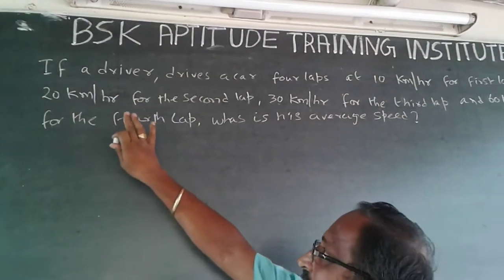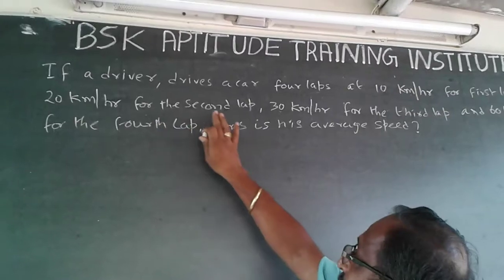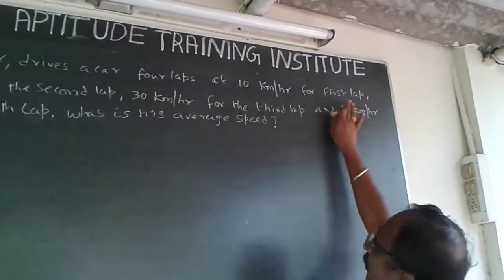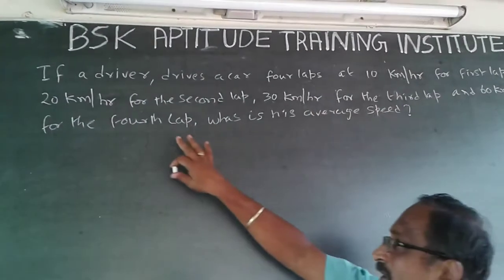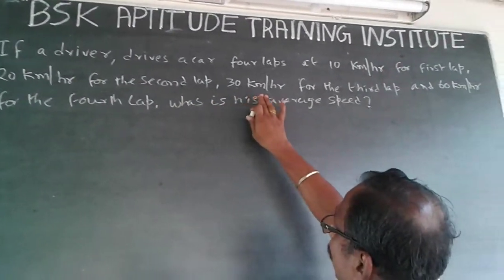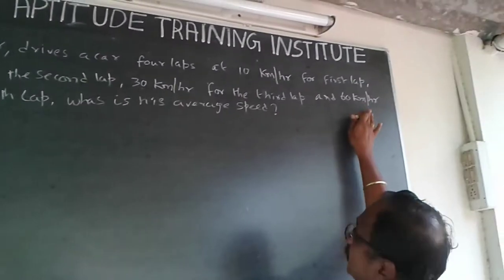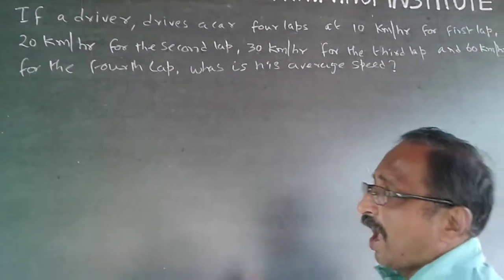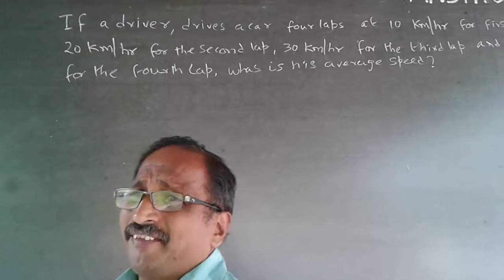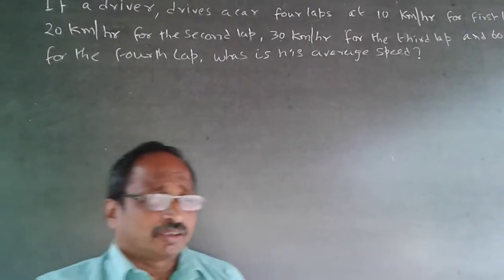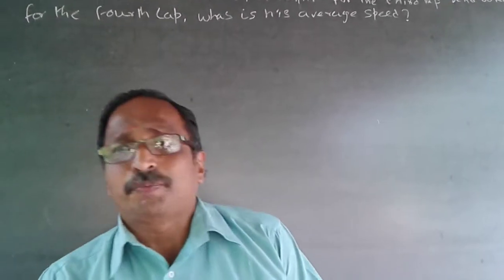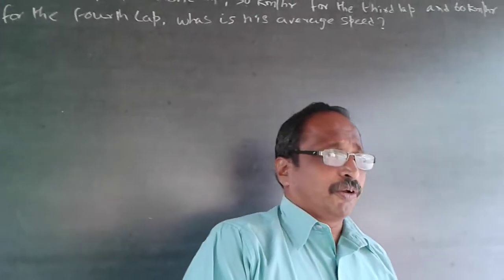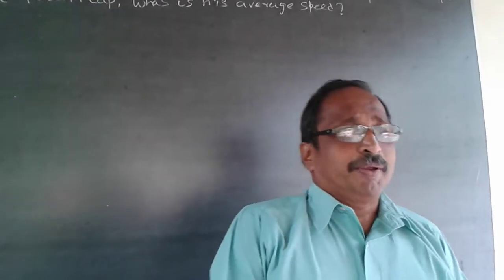The question is: if a driver drives a car 4 laps at 10 kmph for the 1st lap, 20 kmph for the 2nd lap, 30 kmph for the 3rd lap, and 60 kmph for the 4th lap, what is the average speed? This is a speed, time, distance problem — average speed.